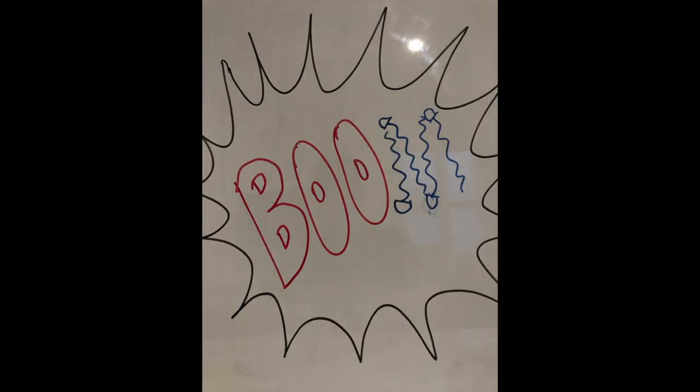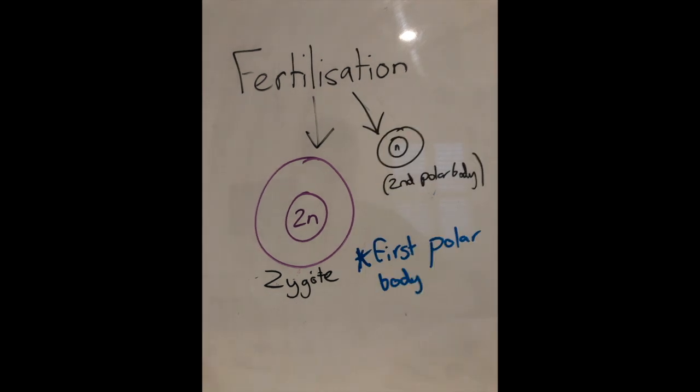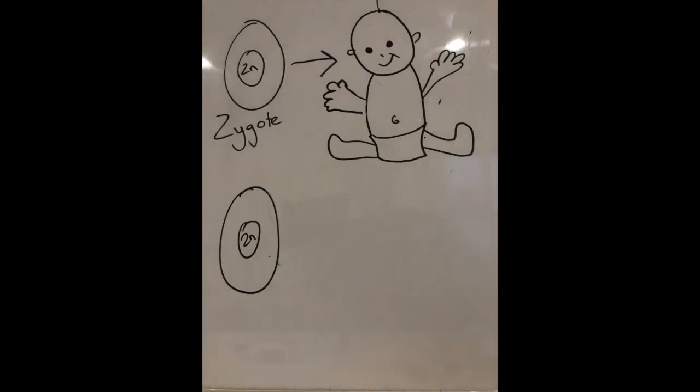When a sperm cell and an oocyte fuse, a zygote is formed through the process of fertilization, followed by embryogenesis where the embryo is formed and developed.